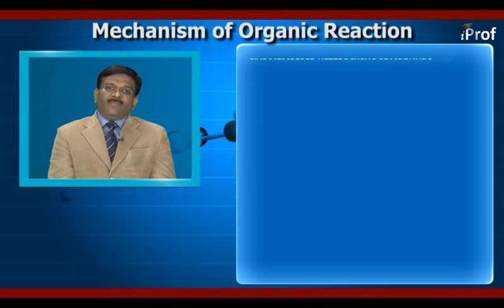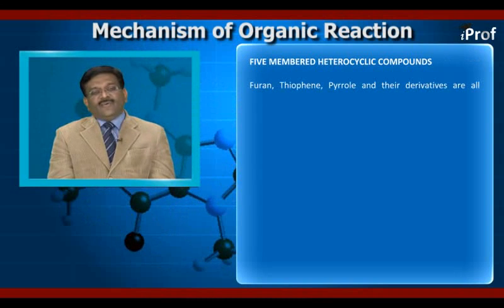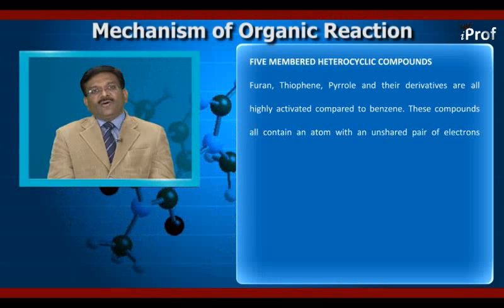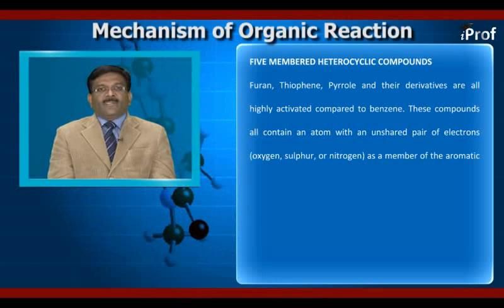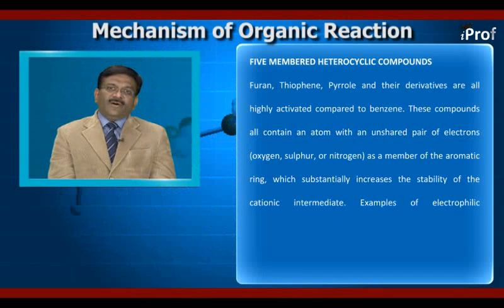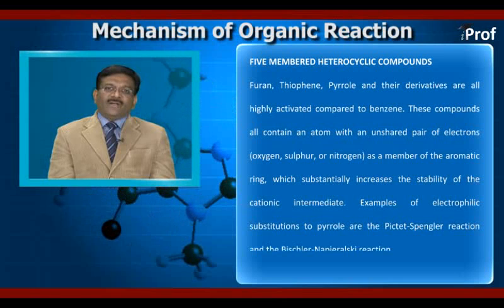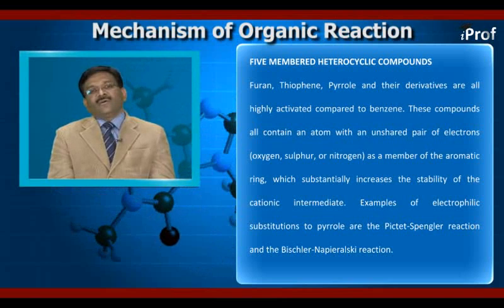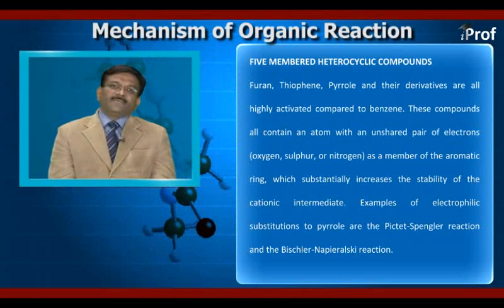The five-membered heterocyclic compounds — furan, thiophene, and pyrrole — and their derivatives are all highly activated compounds as compared to benzene. These compounds all contain an atom with an unshared pair of electrons: oxygen, sulfur, or nitrogen, as a member of the aromatic ring.